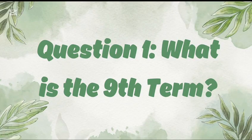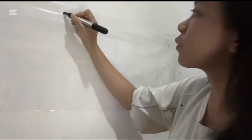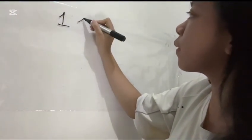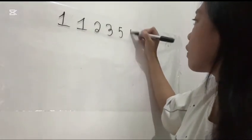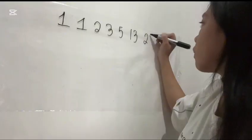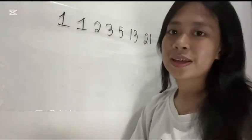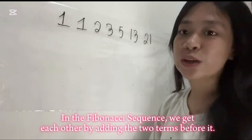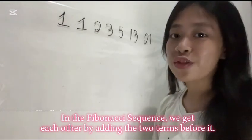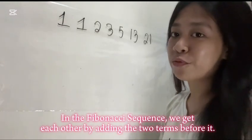Question number one, what is the ninth term? Let's find the ninth term together. In the Fibonacci Sequence, we get each term by adding the two terms before it.